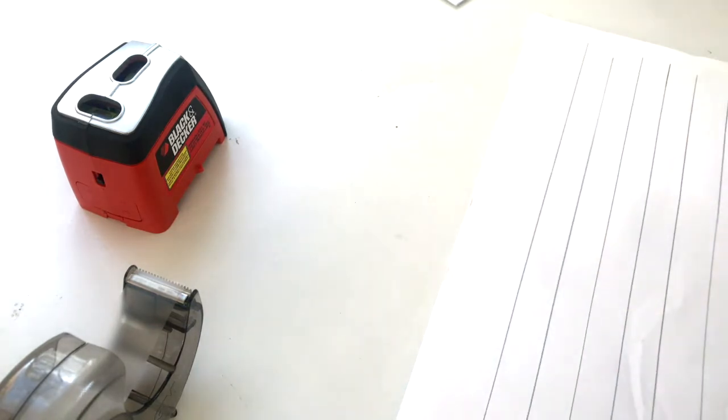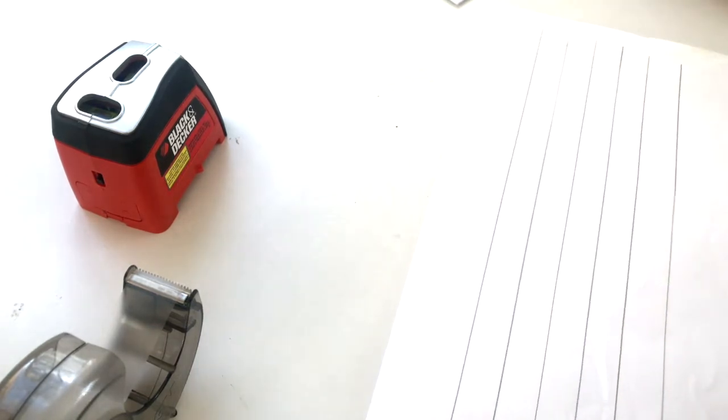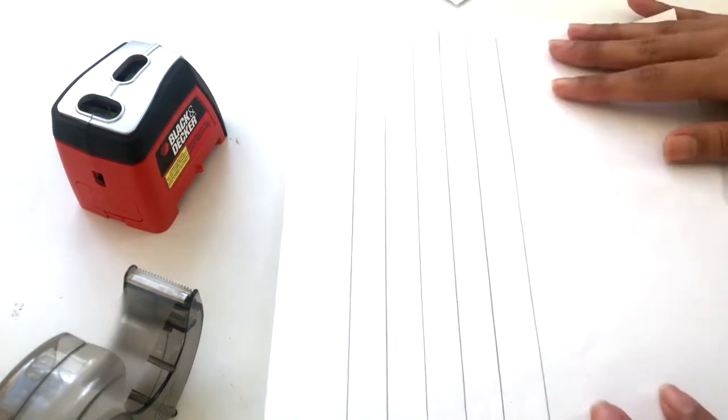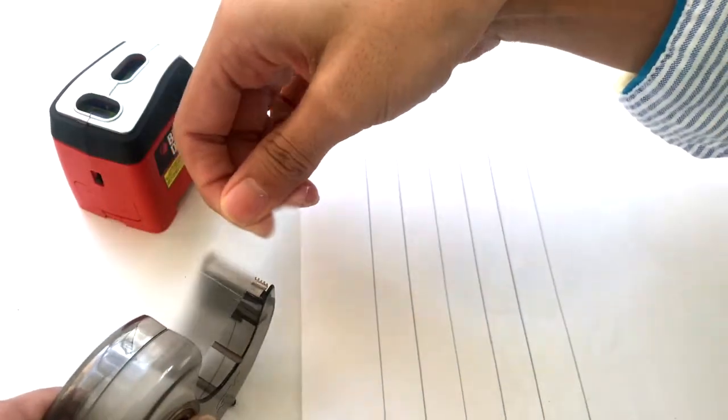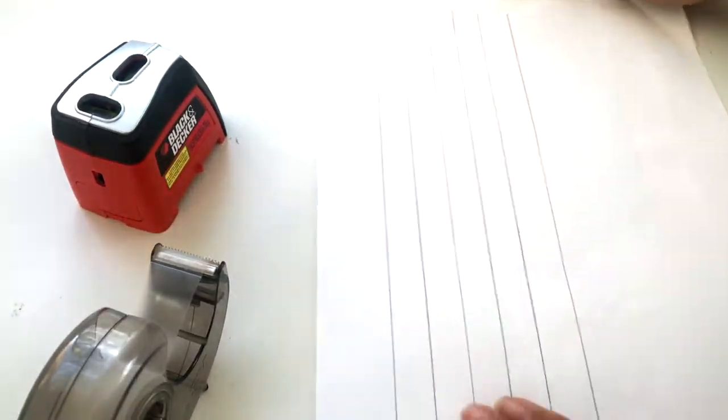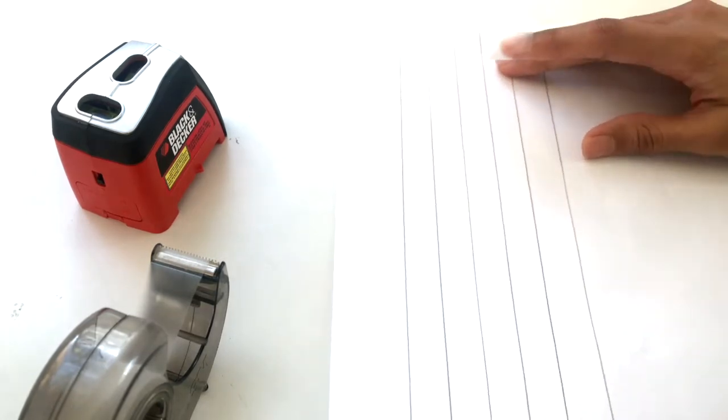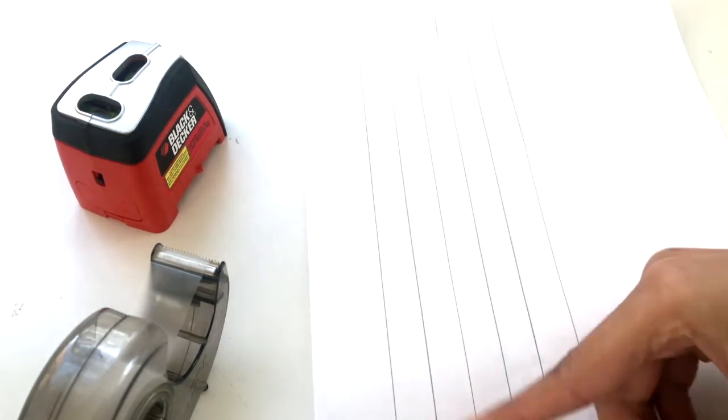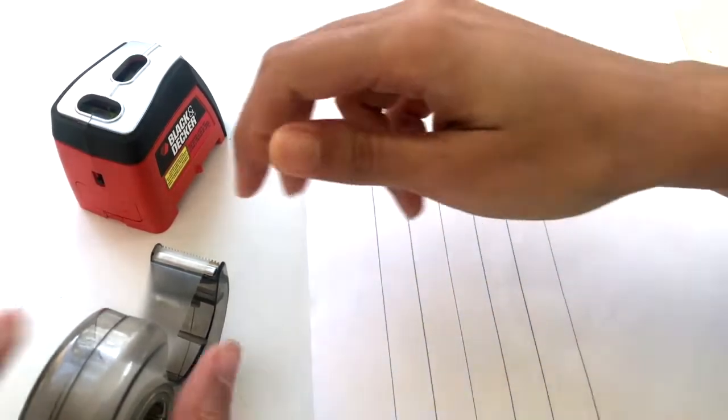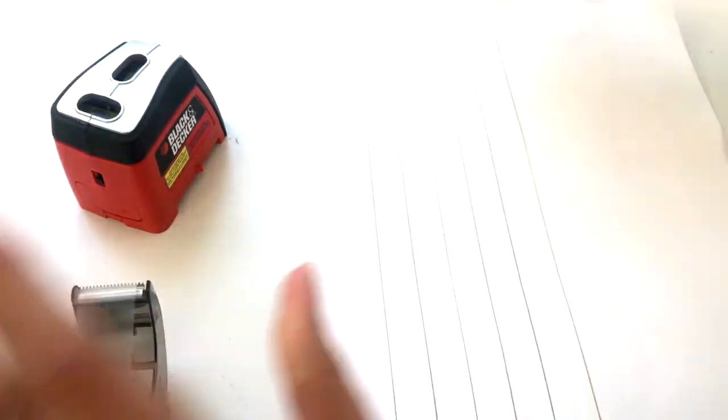Next I'm going to keep my ruler and pencil away for now and then I'm going to take my scotch tape and tape this guideline template that I just made onto my table directly so that it doesn't move while I scribe.